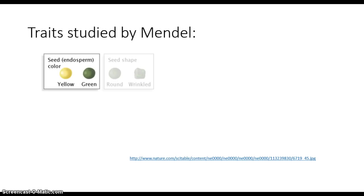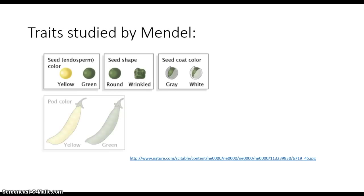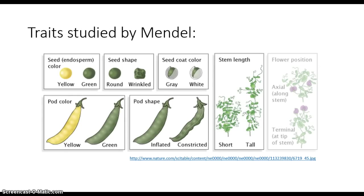The traits he studied included seed color, seed shape, seed coat color, pod color, pod shape, stem length, and flower position. These traits were useful because they were easy to see, certainly with the colors, and as well, they came in two forms. There was nothing in between these two extremes. This made them easy to trace through the generations.